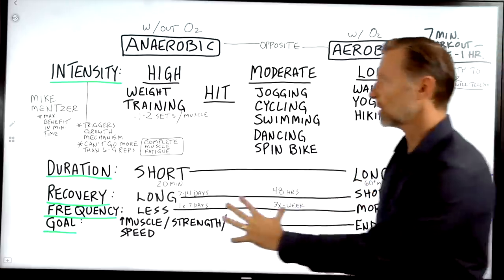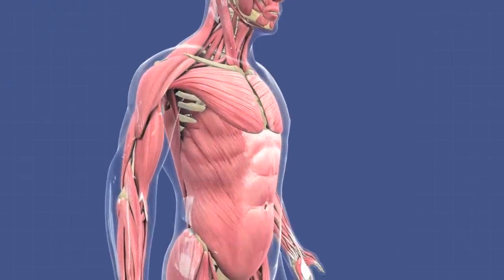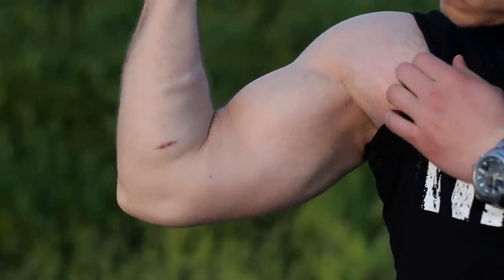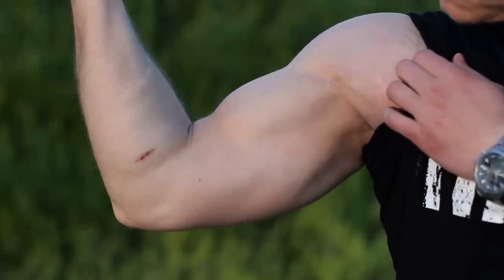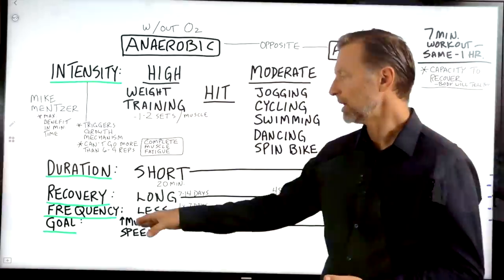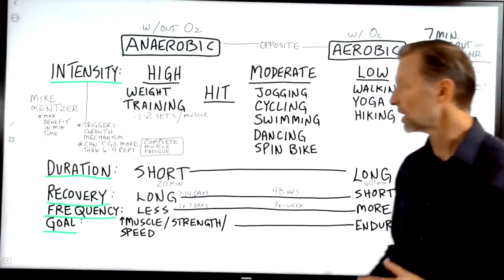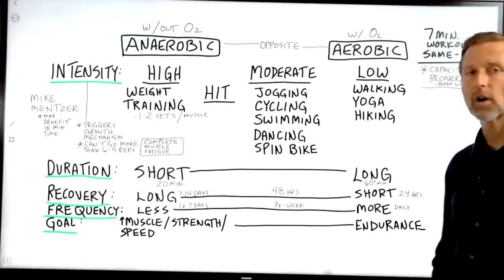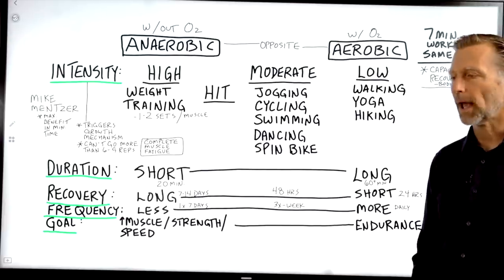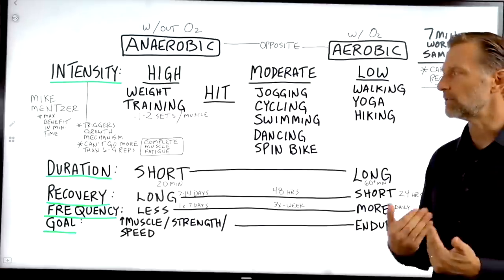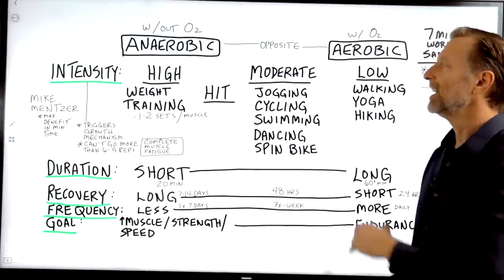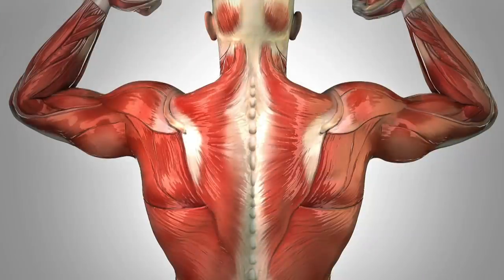The goal of anaerobic exercise is to increase muscle stimulation, increase muscle growth, increase muscle strength, as well as increasing speed. The goal of the aerobic system is to create more endurance and more capacity to go longer without fatigue. You should do a combination of both, because you want to at least maintain your muscles.